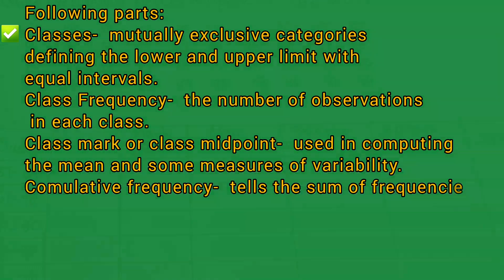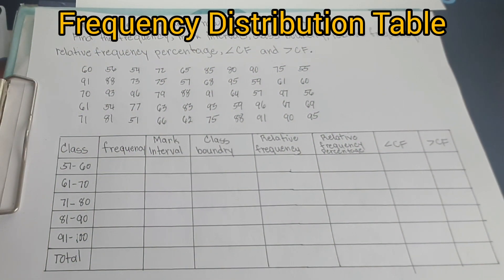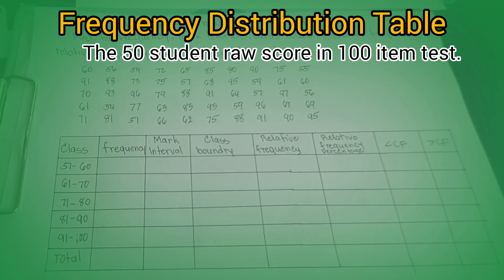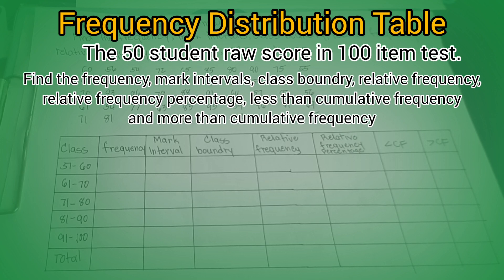Here is the example about solving a frequency distribution table. The example involves 50 student raw scores in a 100-item test. Find the frequency, mark intervals, class boundary, relative frequency, relative frequency percentage, less cumulative frequency, and more than cumulative frequency.